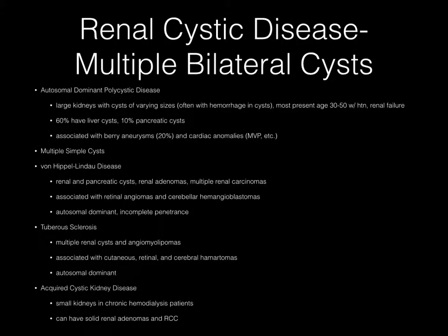Autosomal dominant polycystic kidney disease presents with large kidneys with cysts of varying sizes, often with hemorrhage. Most present between ages 30 and 50 with hypertension and renal failure. Liver cysts and pancreatic cysts may be present, and the disorder is associated with berry aneurysms and cardiac anomalies. Multiple simple cysts can be present bilaterally. Von Hippel-Lindau disease can manifest with renal and pancreatic cysts, renal adenomas, and multiple renal carcinomas, associated with retinal angiomas and cerebellar hemangioblastomas.